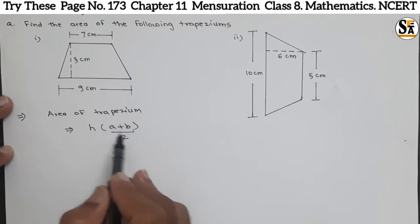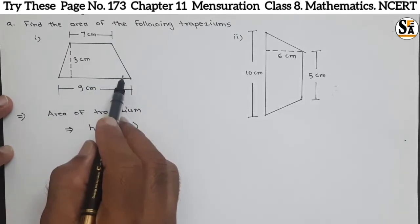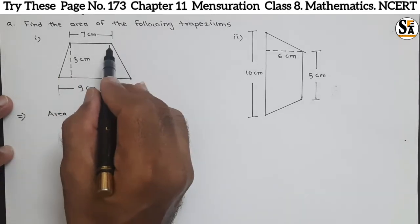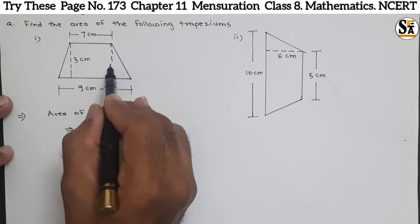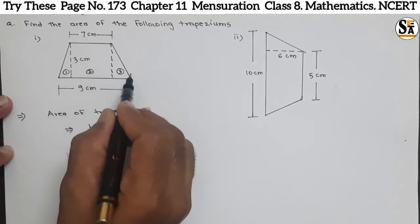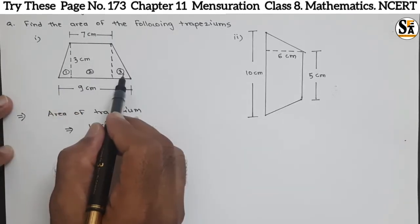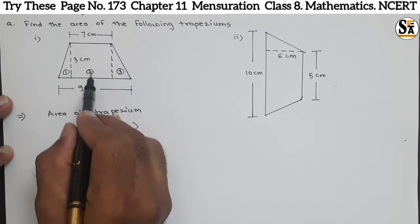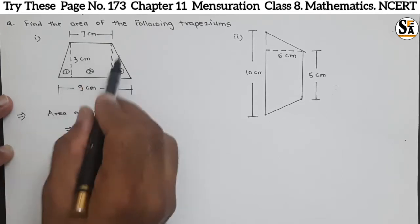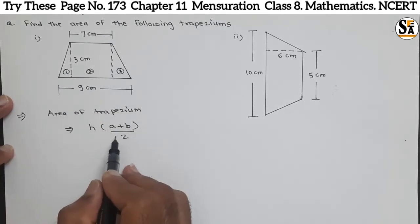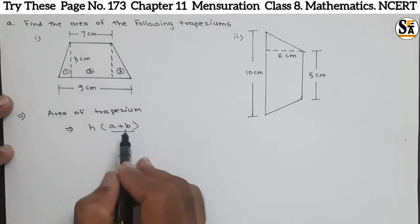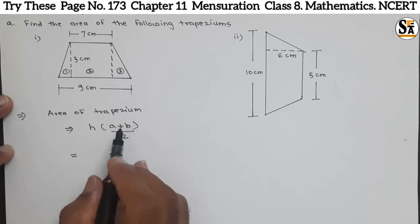In the previous question we saw how this formula is derived — we subdivide the trapezium figure into three parts: two triangles and one rectangle. If we divide the figure into these three parts — first part, second part, and third part — and add the areas of these three figures, it is very easy because it is a triangle, a rectangle, and a triangle. Adding all three gives the total area of the trapezium, and the formula is h into the sum of the two parallel sides, divided by 2.